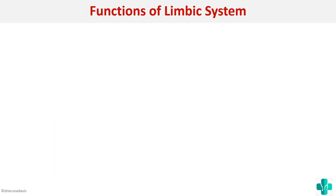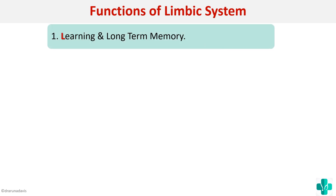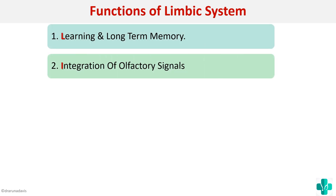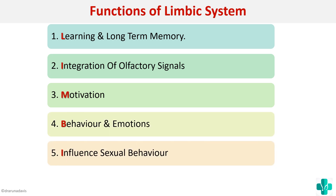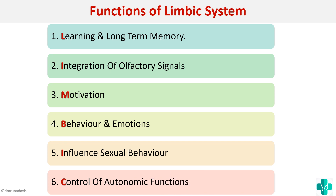To summarize, the functions of the limbic system are: first, learning and long-term memory; second, integration of olfactory signals; third, motivation; fourth, behavior and emotion; fifth, influence on sexual behavior; and sixth, control of autonomic functions. I hope this concept is clear. Thank you.